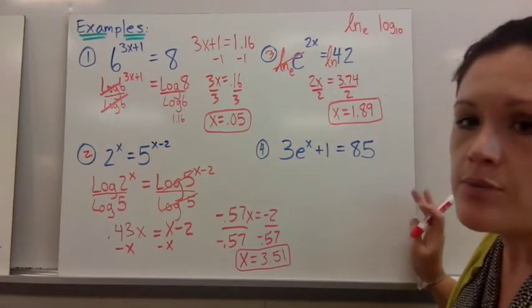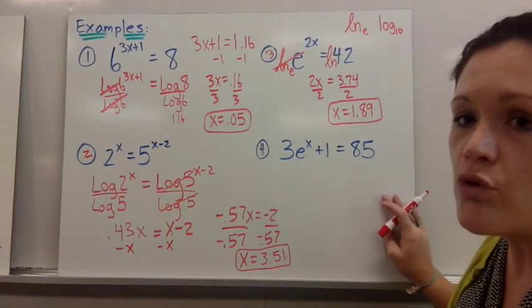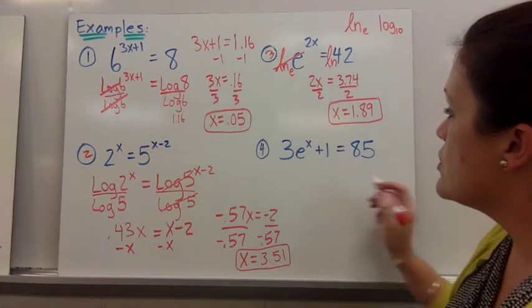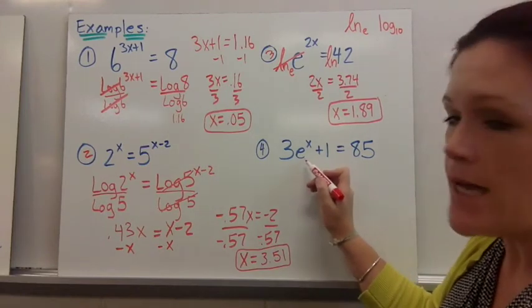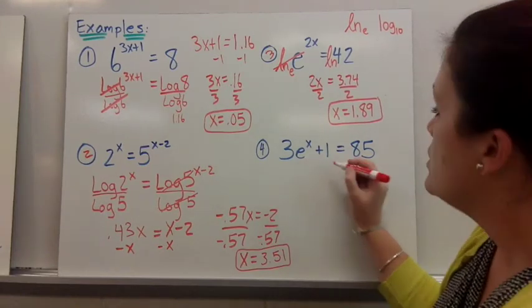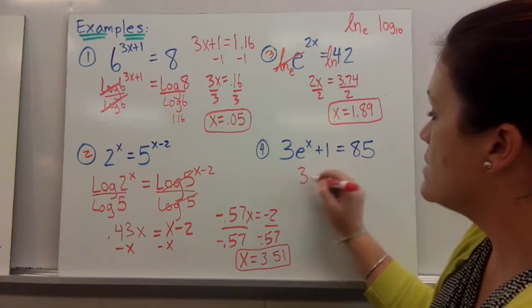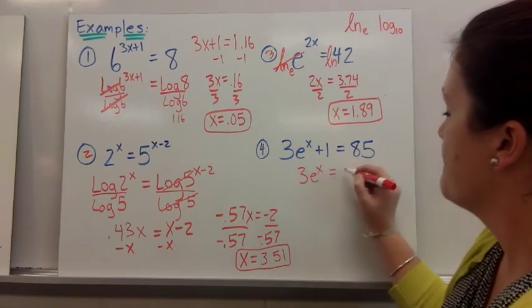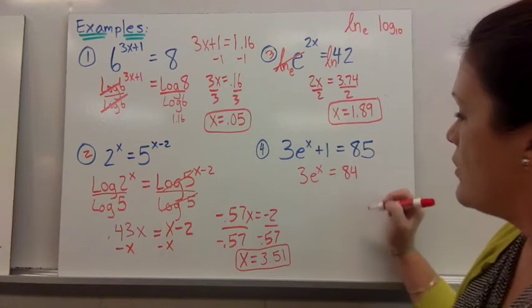So on the last example there's just a little more going on before we can take natural log. First we need to get that e to the x power by itself. So first I'm going to subtract the 1. So I'll get 84.